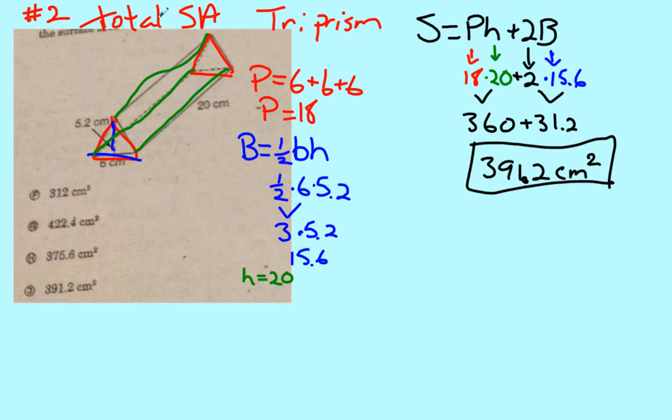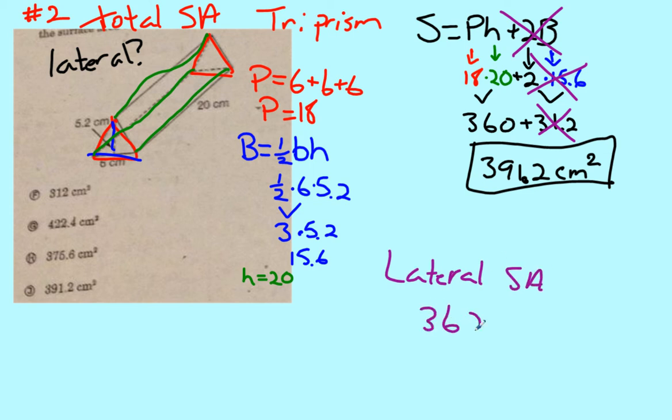And that's centimeters, and this is area, so that's squared. So 391.2 square centimeters. Just in case this wasn't total surface area and we just wanted lateral - well, lateral area is just everything except the two bases. So if we just knocked off the 2B and we just have Ph, so our lateral surface area would just be 360 centimeters squared. And that's not an answer choice, but 391.2 is, so I'm going to pick that one. That was fun.